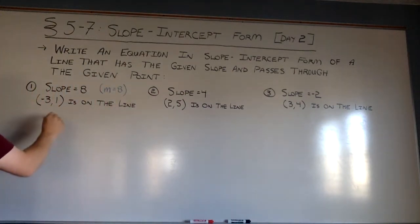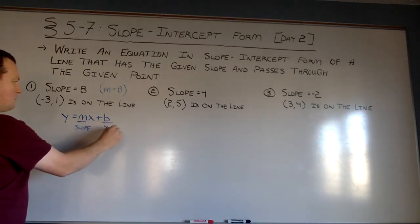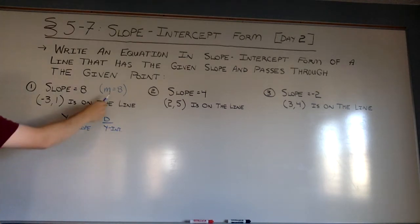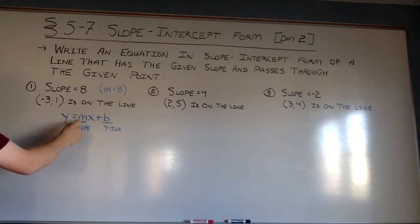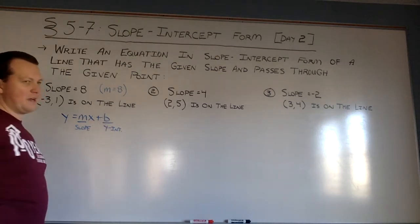So remember what I need for slope-intercept form, y equals mx plus b, is I need m, the slope, and b, the y-intercept. I will give you the m slope in each of these examples. So in my final equation, m is going to equal 8. So what I need to do somehow is to find b, the y-intercept.